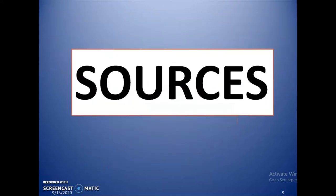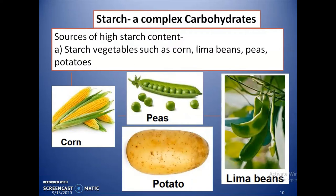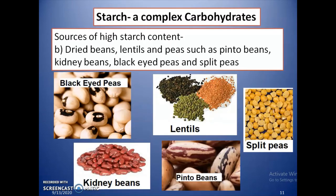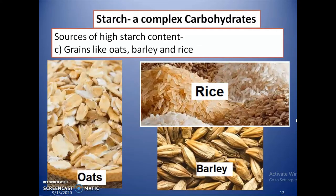There are various sources of carbohydrates. Sources of starch are starchy vegetables such as corn, lima beans, peas, and potatoes. Other sources are dried beans, lentils, and peas such as pinto beans, kidney beans, black-eyed peas, and split peas. Another source of starch is oat, barley, and rice.